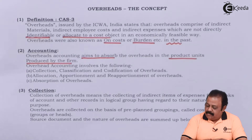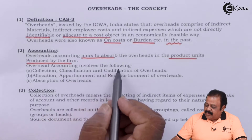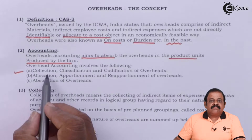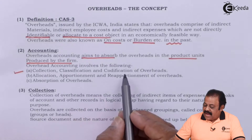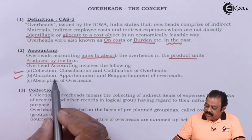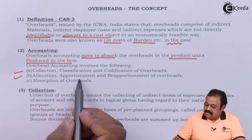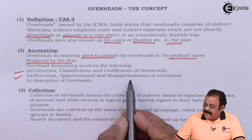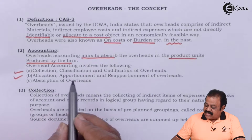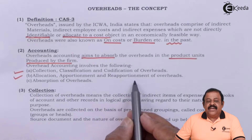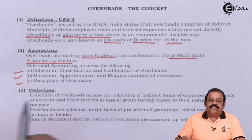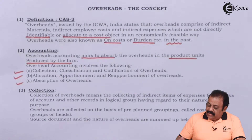Overhead accounting involves the following steps: (a) collection, classification, and codification of overheads; (b) allocation, absorption, and reapportionment of overheads; and (c) absorption of overheads.